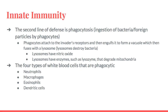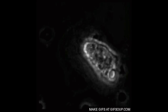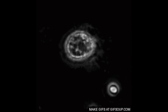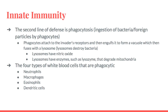Now moving into the second line of defense in innate immunity. The main part of the second line of defense is phagocytosis, which is the ingestion of bacteria or foreign particles by phagocytes — a type of white blood cell. The bacteria usually have a receptor that phagocytes can detect because normal body cells do not have it. The phagocytes attach to the invaders that have those receptors and engulf them, forming a vacuole that fuses with a lysosome. These lysosomes destroy the bacteria using nitric oxide and enzymes such as lysozyme.